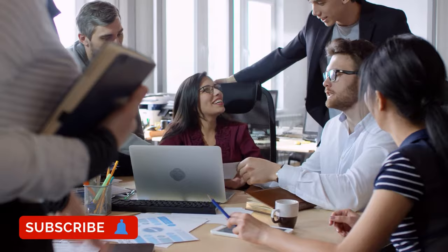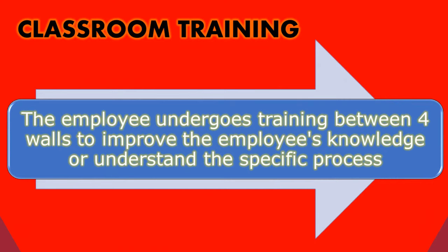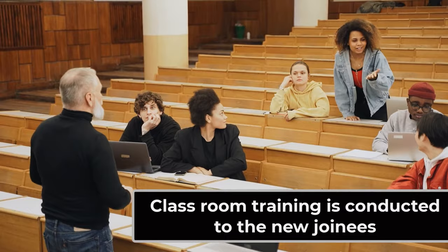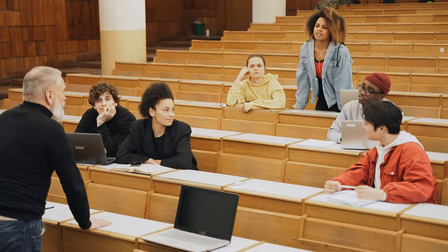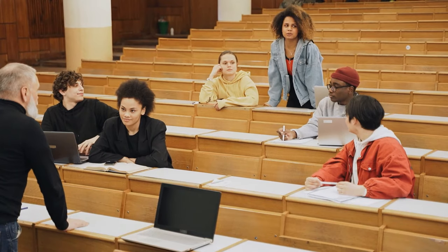The fourth off-job training method is classroom training, which is the most common type. The employee undergoes training between four walls to improve knowledge or understand a specific process. Classroom training is usually conducted for new trainees to help them understand the rules, procedures, and policies of the organization. The major disadvantage is that it can be boring at times, but two-way communication between the trainer and employee can make the session lively and interesting.